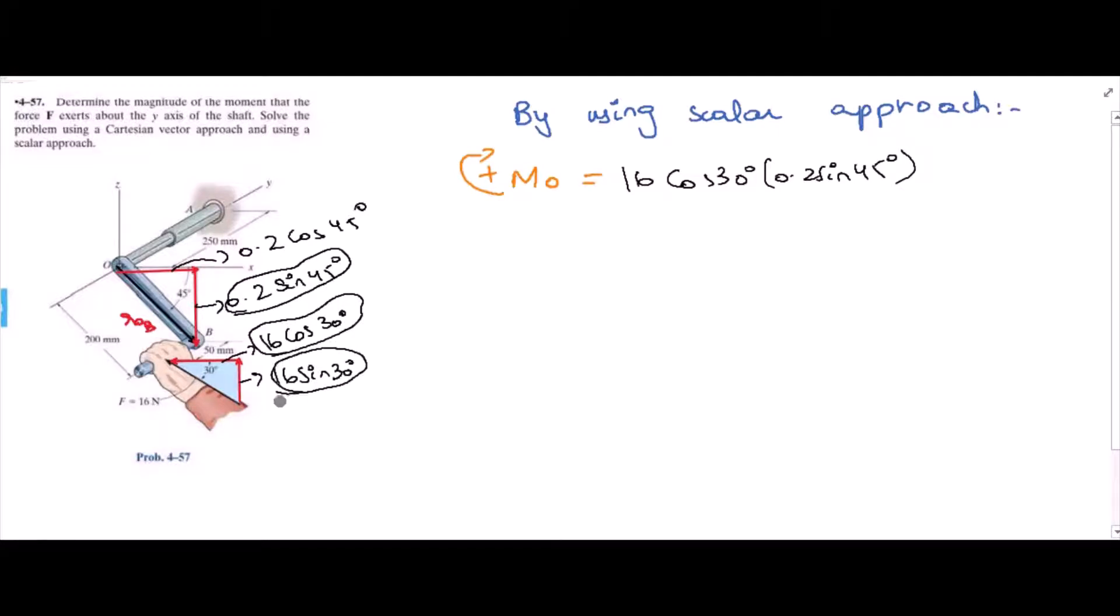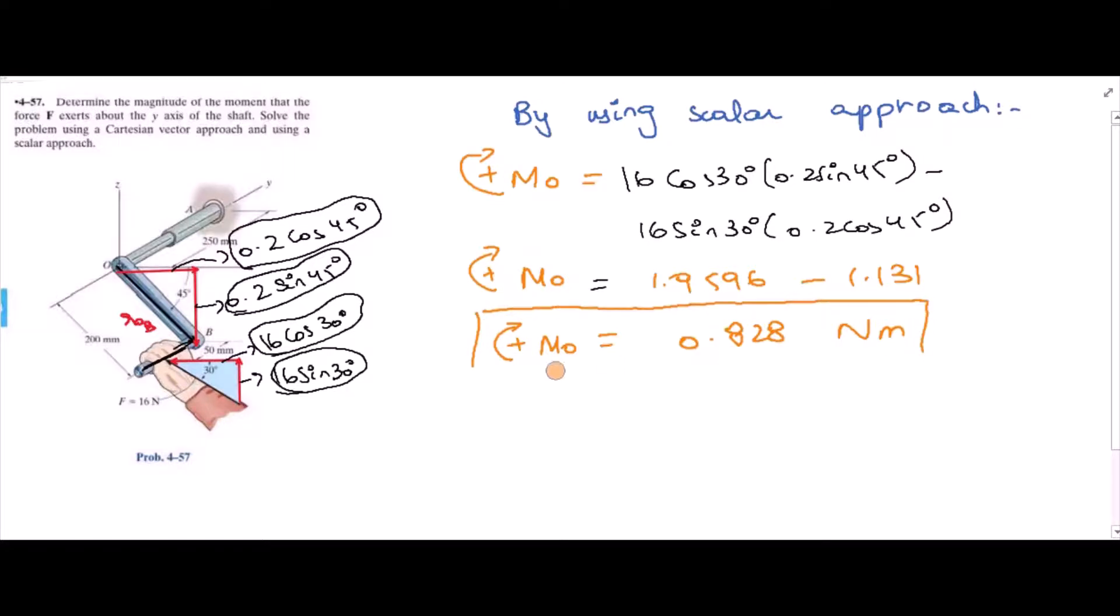Now if you look at this component 16 sin 30, it is producing counterclockwise moment about this handle, so we have to take it as negative: 16 sin 30 into the moment arm, which is 0.2 cos 45. Now moment at point O is equal to 1.9596 minus 1.131, so our answer is 0.828 Newton-meters. This is our answer by the scalar approach.